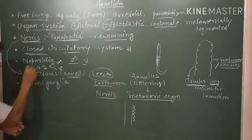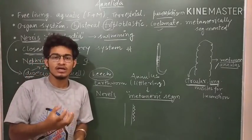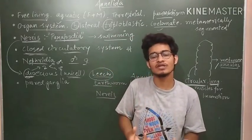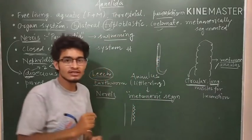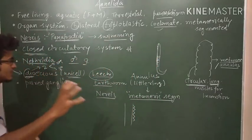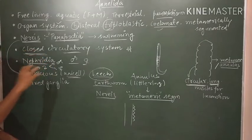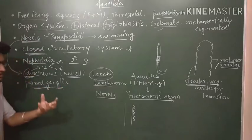After that, there is nephridia. Nephridia are the excretory organs which help in the excretion of waste products as well as it helps in the osmoregulation, just like the flame cells. Flame cells were present in Platyhelminthes. So just like the flame cells of Platyhelminthes, we have nephridia in Annelida.